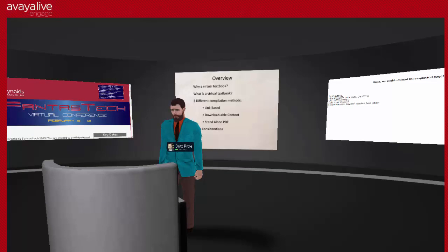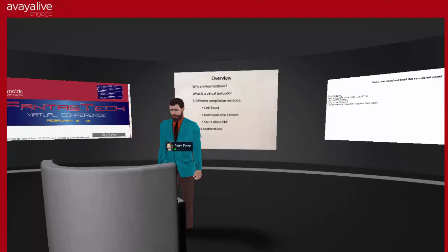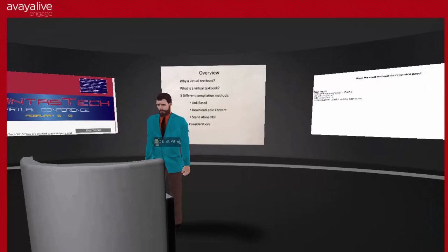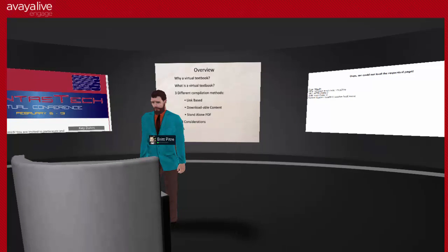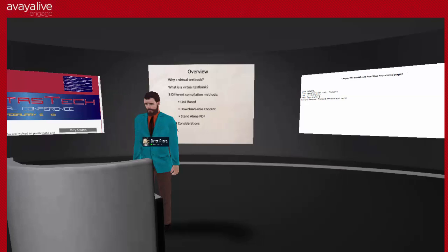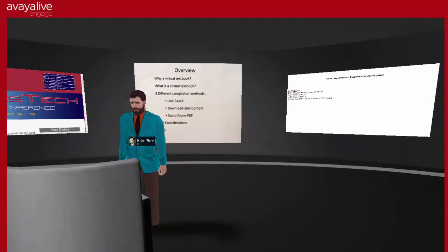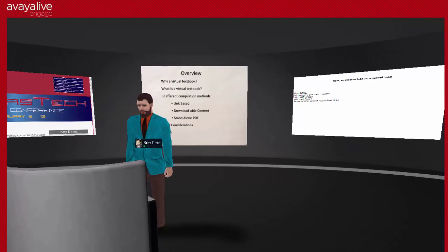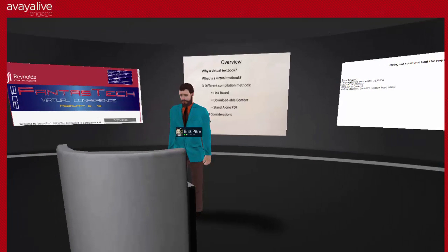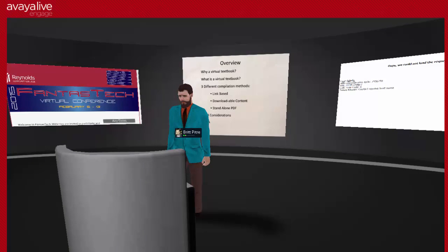Let me give you a little bit of a road map of things we're talking about today. First, we're going to talk about the why and what of a virtual textbook. Then we're going to talk about the different methods we can use to compile web resources to make them available for students. The three areas are link-based virtual textbooks, downloadable content, and creating a standalone web document. The last thing we'll talk about are the legal considerations.